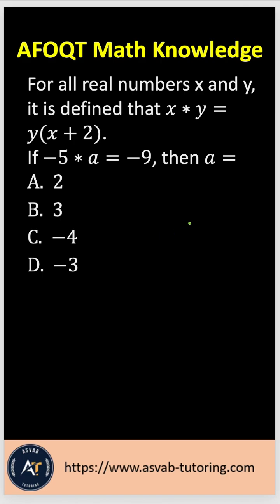The question says for all real numbers x and y, it is defined that x asterisk y equals y times the quantity x plus 2.